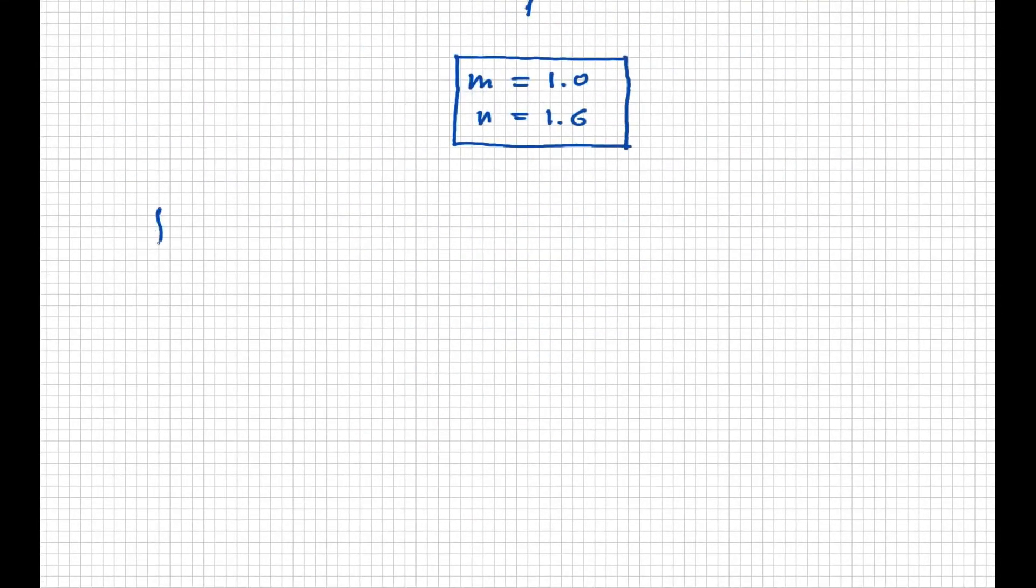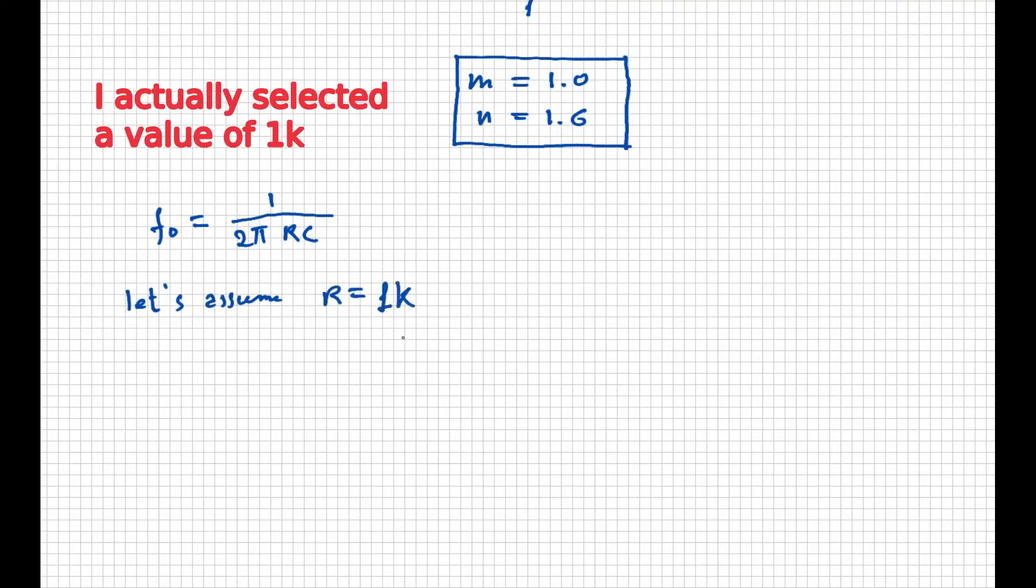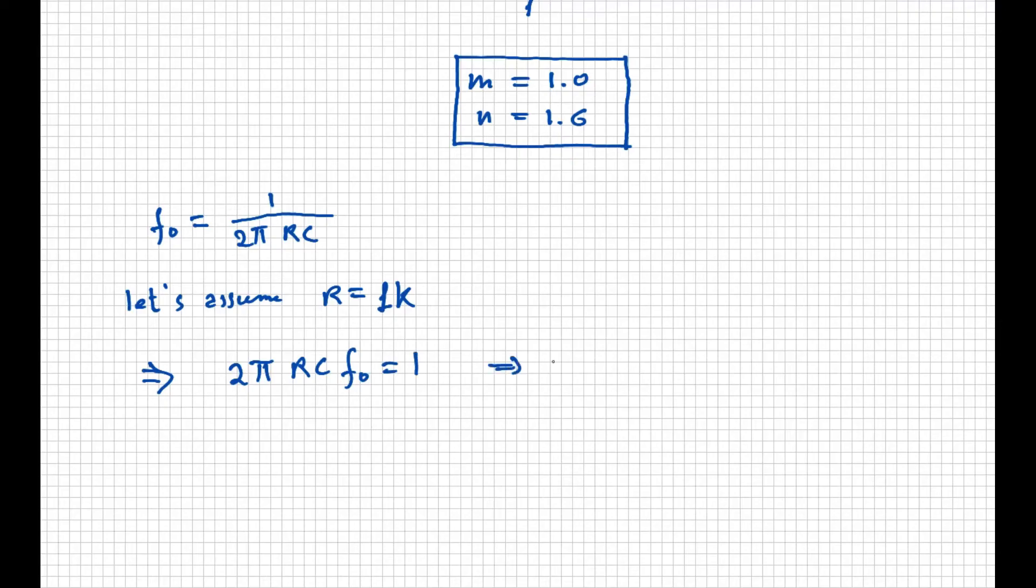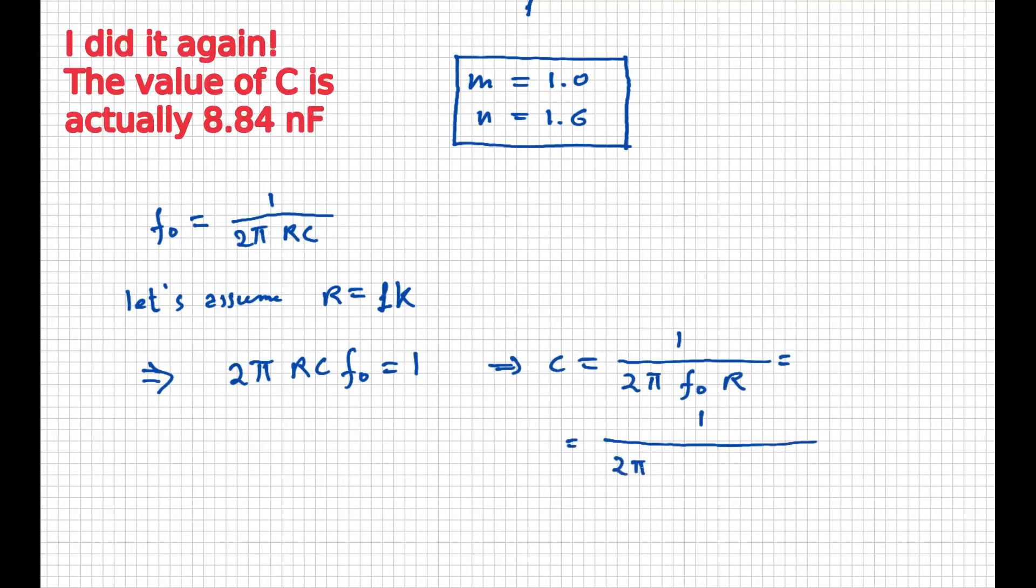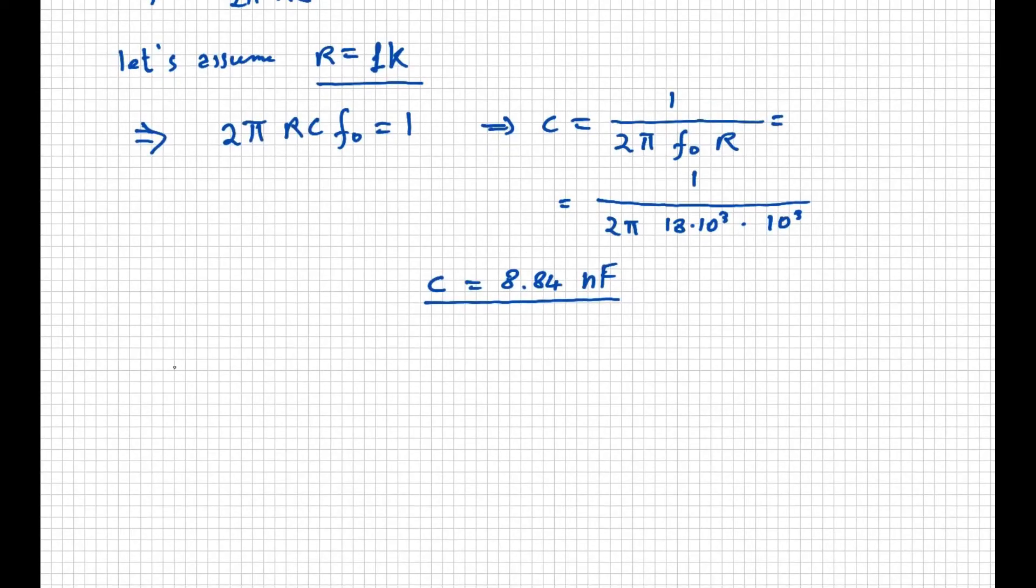Let's now use the other design parameter, F0, which is equal to 1 over 2π RC. And let's select a resistor R of 10 kΩ. A few calculations, and the value for C is 884 pF. Now we can calculate the actual values of R1, R2, C1 and C2.